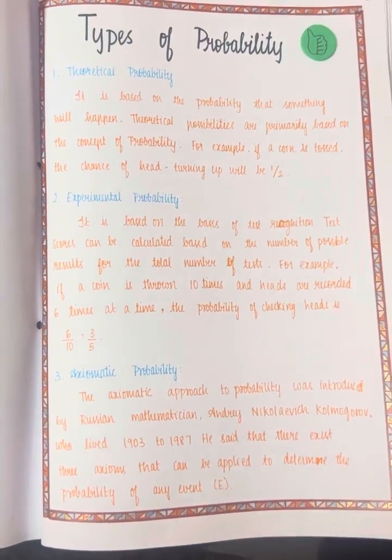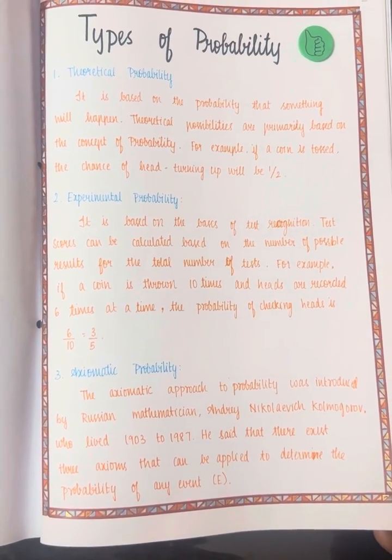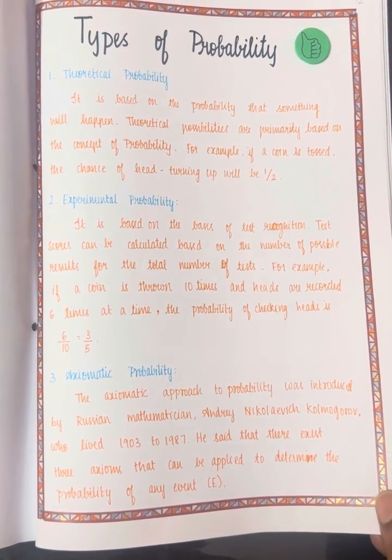The types of probability are explained: theoretical, experimental, and axiomatic.